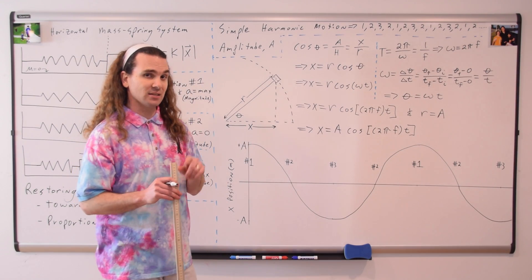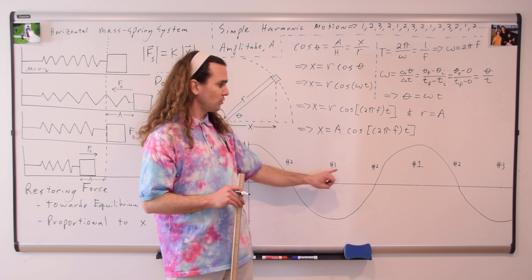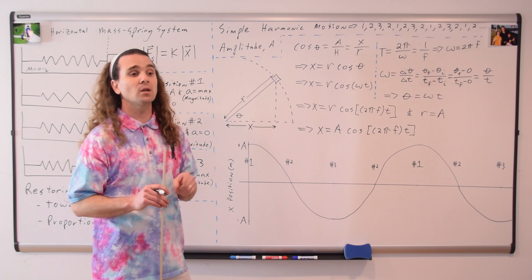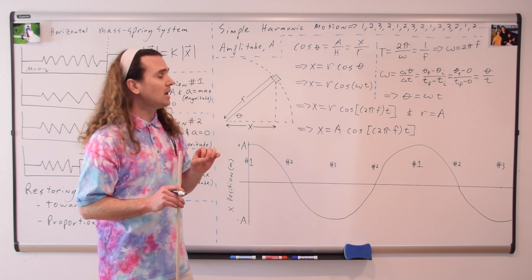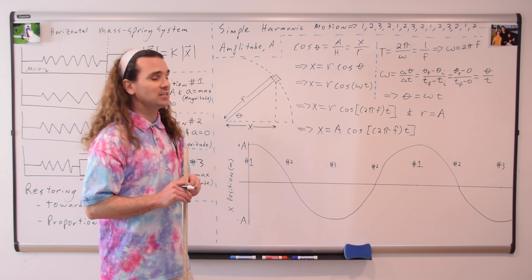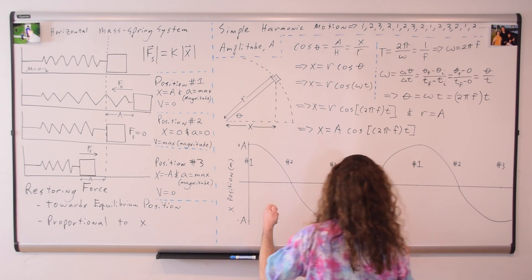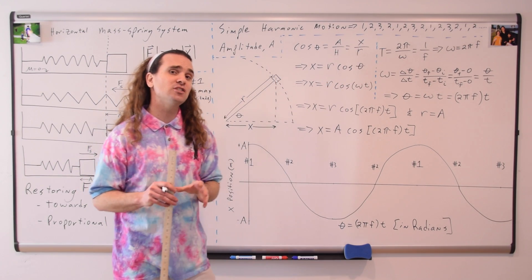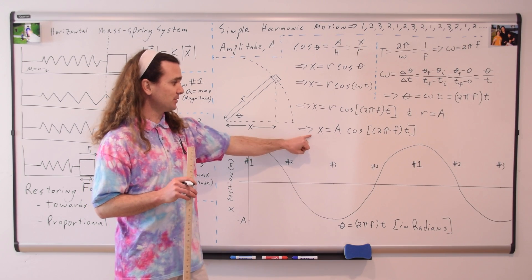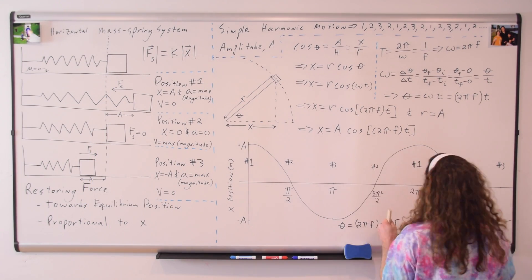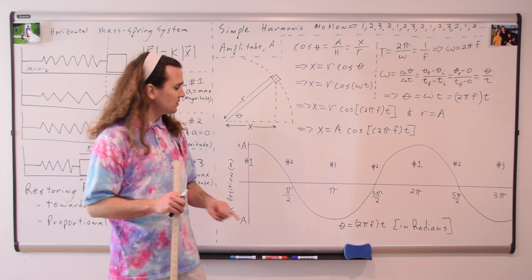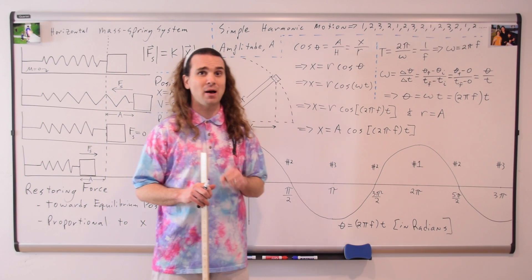You can see the position graph follows exactly what we talked about before. The mass-spring system oscillates back and forth between positions one, two, three, two, one, and so on. The horizontal axis: this is a graph of cosine of theta, and theta is equal to two pi times the frequency times time. It is important to realize that we defined theta in terms of radians. Therefore, these are not 90, 180, 270, and 360 degrees — these are pi over 2, pi, 3 pi over 2, and 2 pi radians. Please be careful of that.